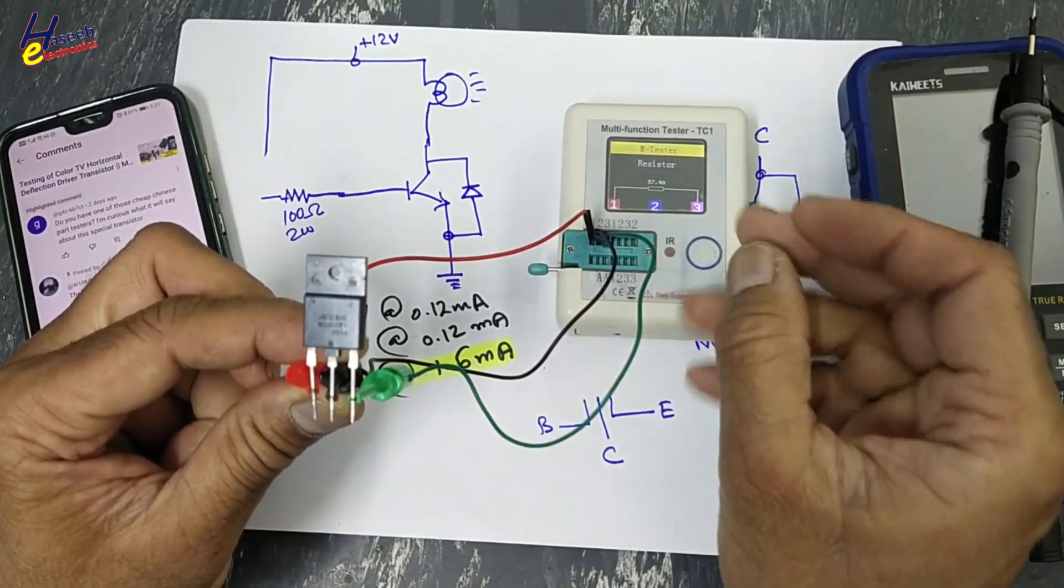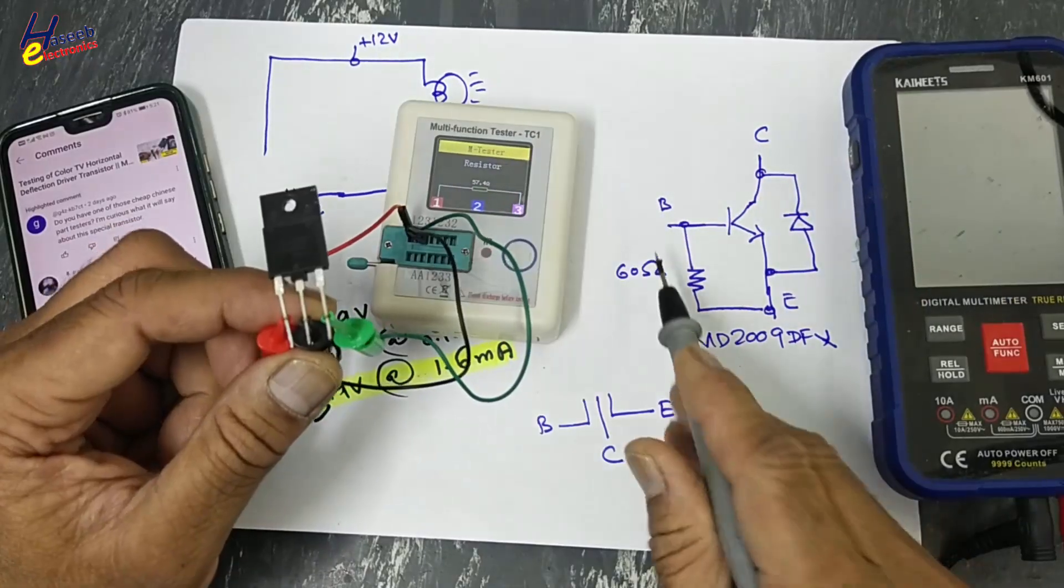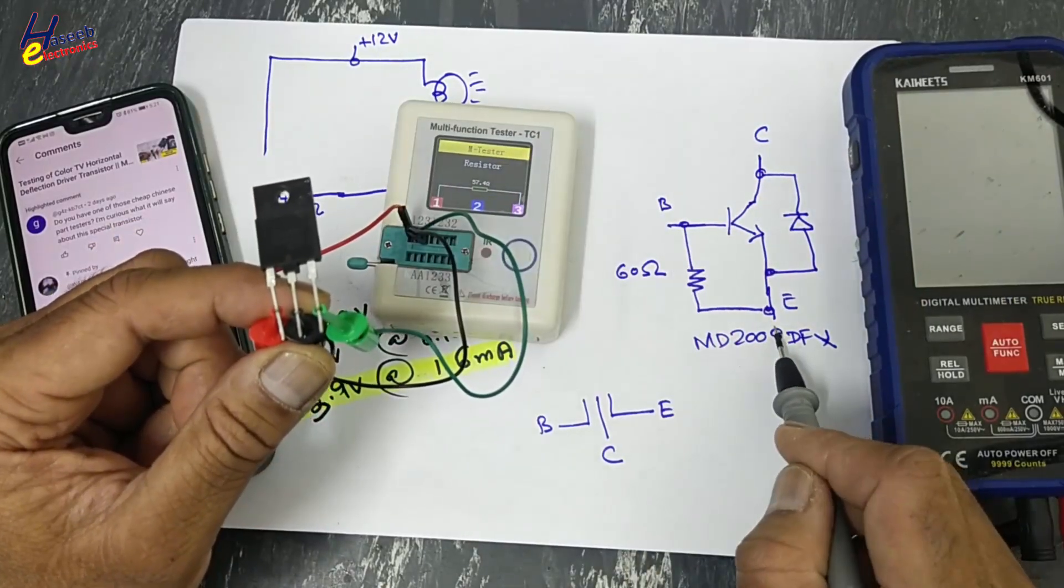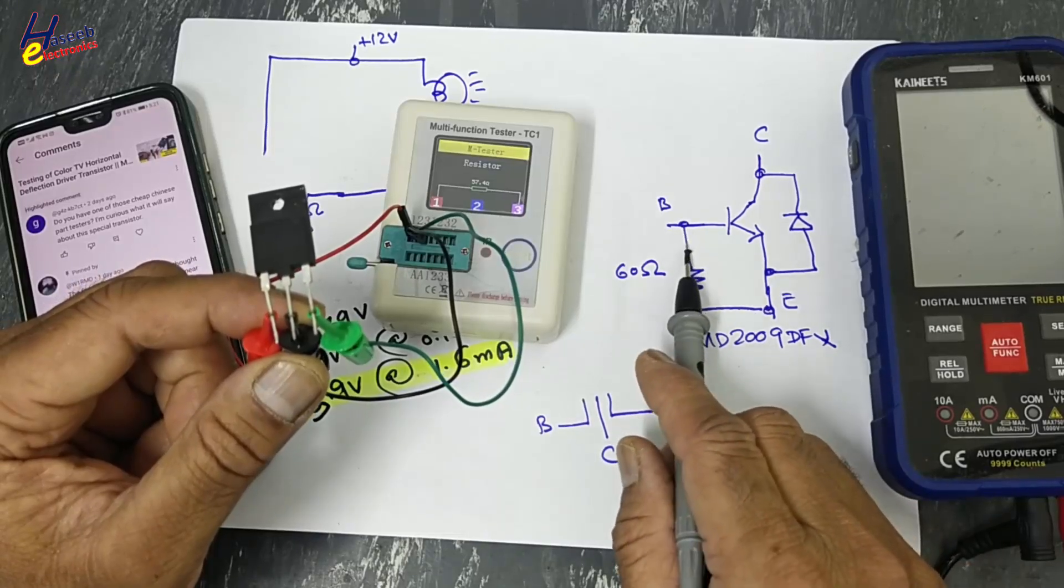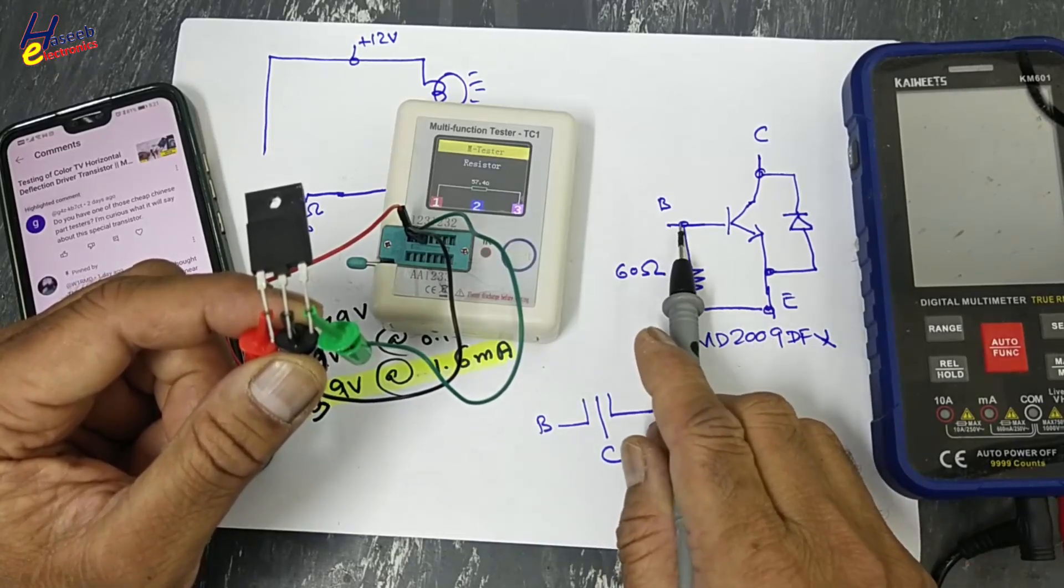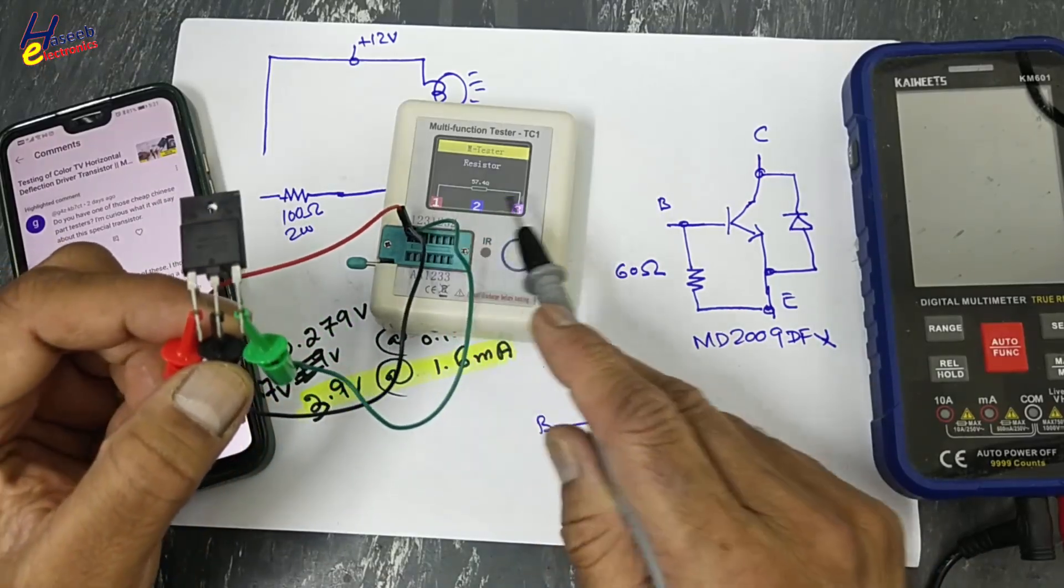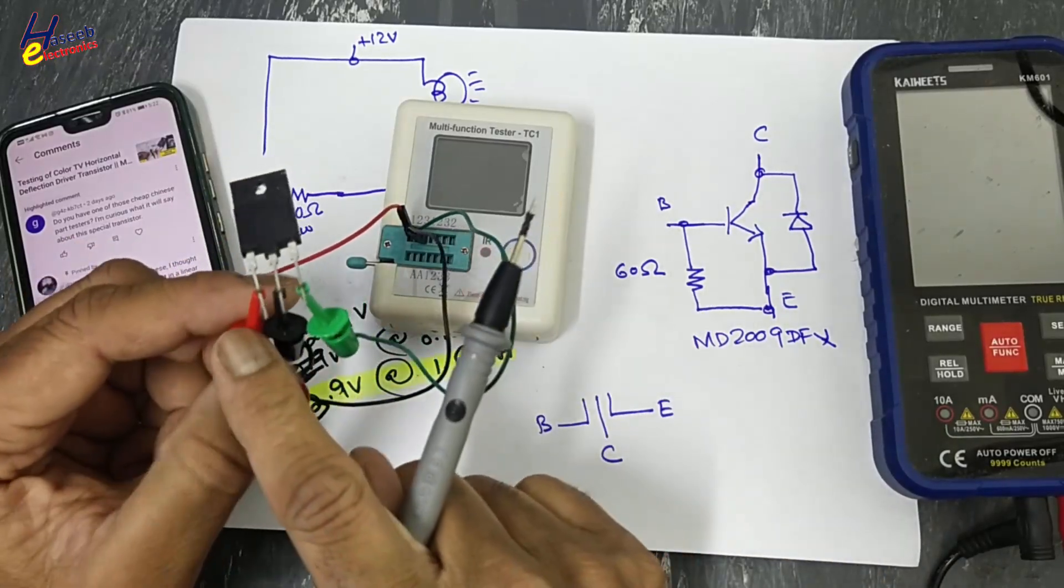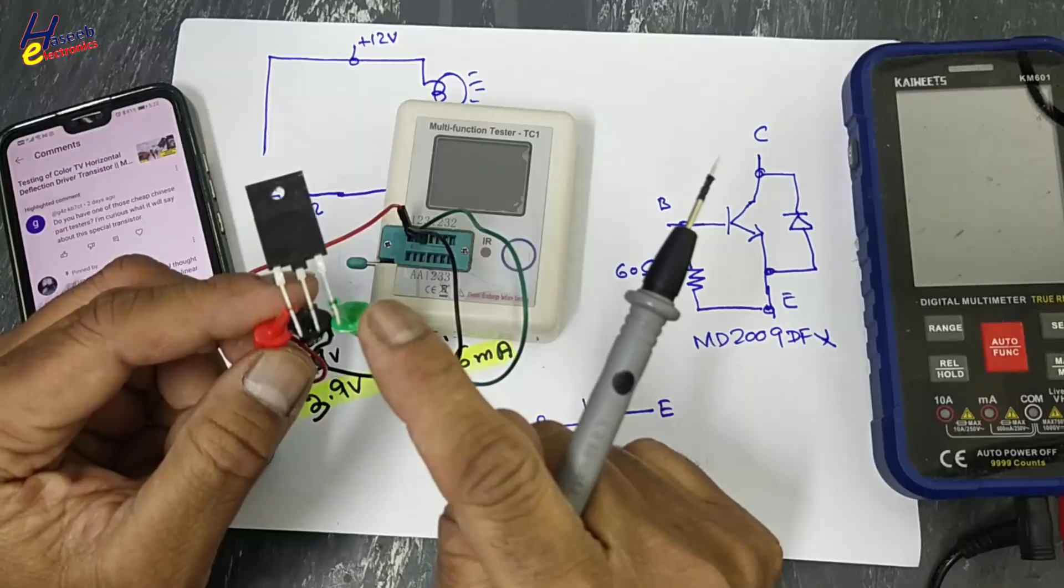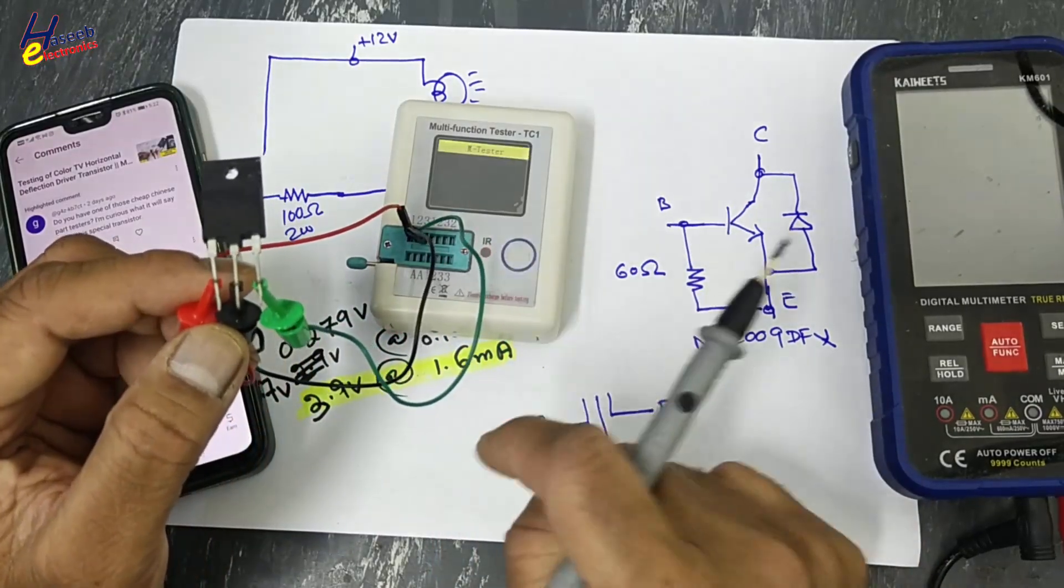57.4 ohm resistor. Why? Because when this tester applies some test signal, it will find the easiest path for the test signal, that is base to emitter. So it is measuring between pin 1 and 3, 57 ohms resistor. Pin 1 is here, that is base, and this is emitter.